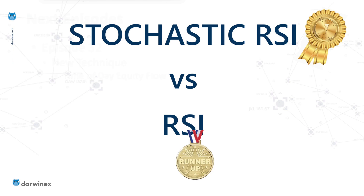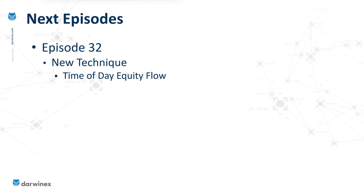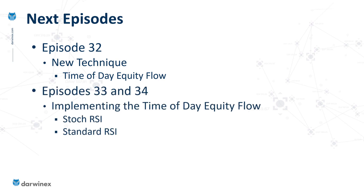There's just one more technique I want to use to compare these two indicators, and that's what I call time-of-day equity flow. I'll be providing an overview of that technique in the next episode, and then in the two episodes that follow I'll be implementing it first for stochastic RSI and then for the standard RSI. If you think you have any relevant hints or tips about the topic of any of my videos, please comment so that I and other viewers can all benefit from your insights.